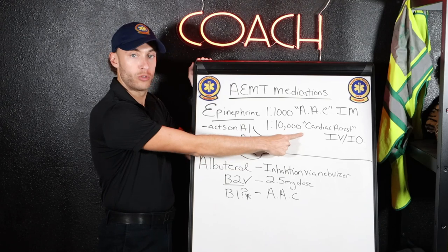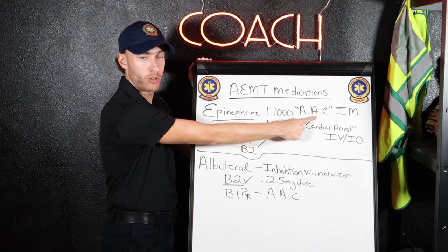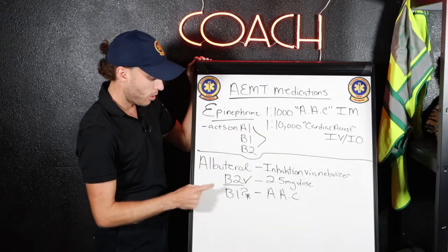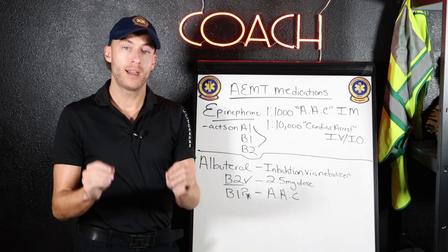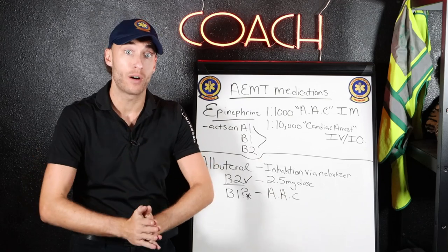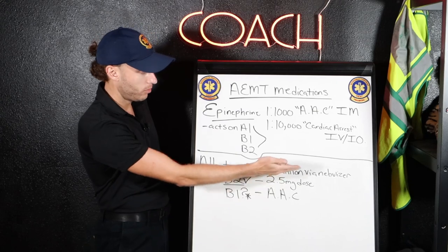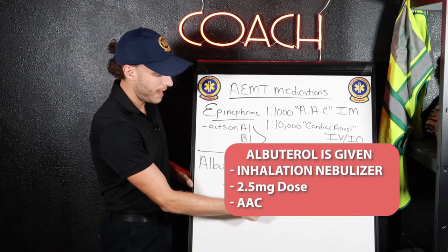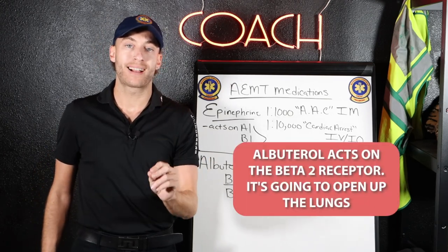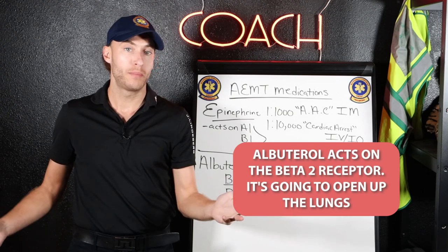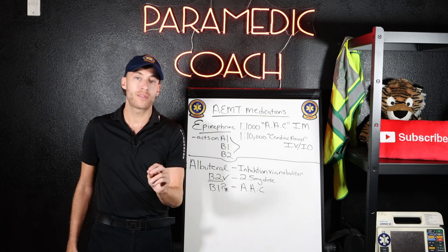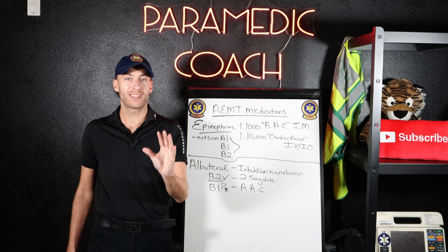When is epinephrine given? Two main functions: cardiac arrest IV/IO, and intramuscularly it could be asthma, could be anaphylaxis, could be severe COPD — wheezing. Now, over here we have albuterol. Albuterol is given — it could be given as a DuoNeb with ipratropium. But let's talk about albuterol by itself. It's given via inhalation via nebulizer at a 2.5 milligram dose. Think AAC. One of the side effects of albuterol is your patient getting a slightly elevated heart rate.